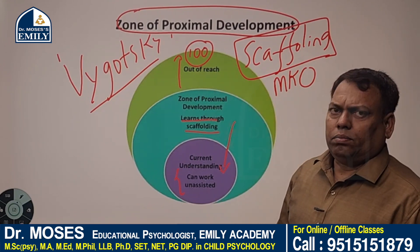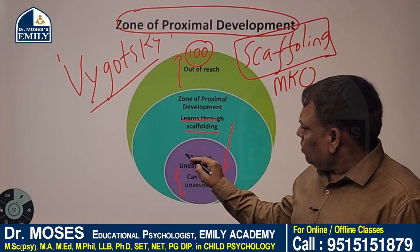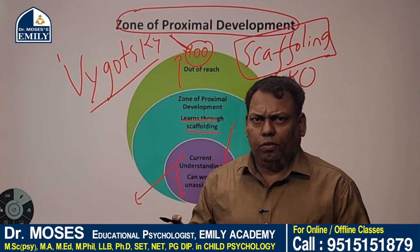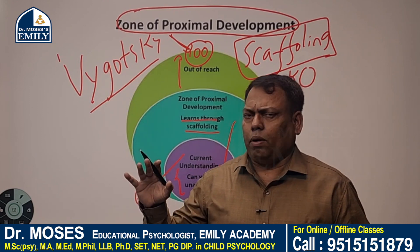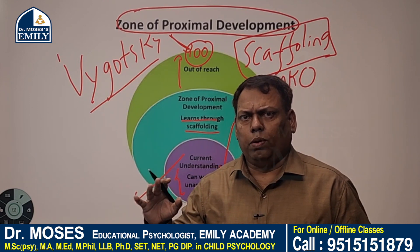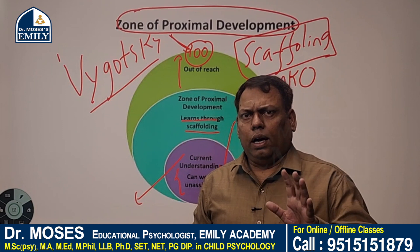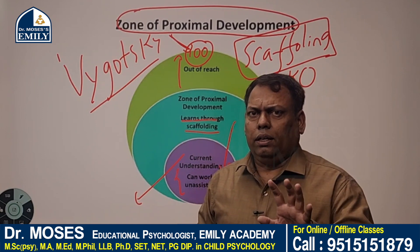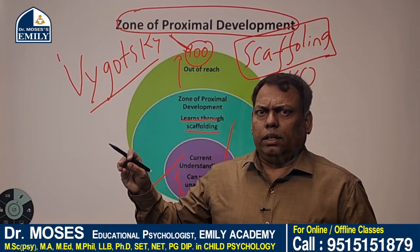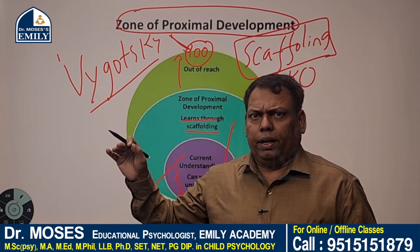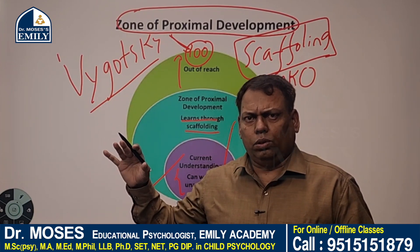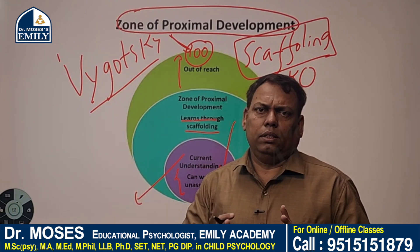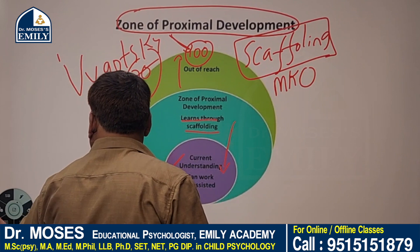This is your actual development; this is probable development. The gap between actual development and probable development is the Zone of Proximal Development. The gap between current understanding of child development pedagogy and understanding it in a better way with the help of coaches, tutors, and mentors — that gap is ZPD.